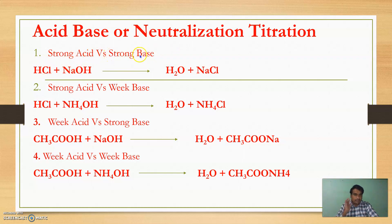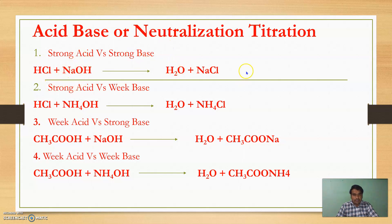The four types are: Strong Acid vs. Strong Base, Strong Acid vs. Weak Base, Weak Acid vs. Strong Base, and Weak Acid vs. Weak Base. Strong Acid vs. Strong Base means HCl (strong acid) is titrated with NaOH (strong base) to give water plus salt. In Strong Acid vs. Weak Base, a strong acid is titrated with a weak base like ammonium hydroxide to give water plus ammonium chloride as a salt.